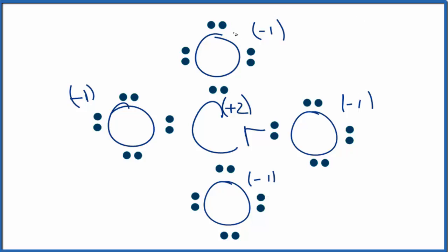What we can do is if we move a pair of electrons here to form a double bond, then our formal charges become zero for this oxygen and then +1 for the chromium. So that's better.